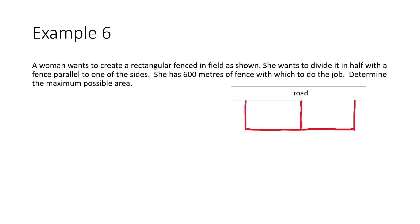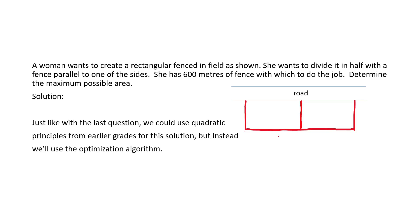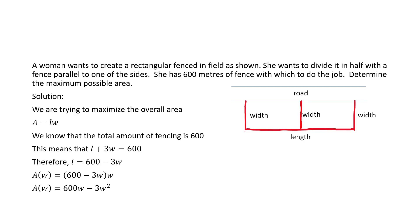A very similar question is shown here. What if we put another line of fencing here? Perhaps there's cows on one side and horses on the other. If that was the case, then we would have, as it's shown here, one length, but three widths. So L plus 3W would be 600.